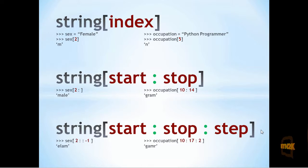At the bottom here, there is a start-stop method. In this way, we can tell it where to start, where to stop, and how to access it. In this first example here, we are accessing it backwards, using a reverse step, so we get elam from male.